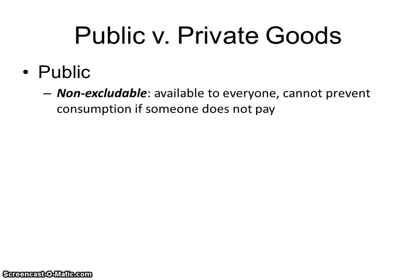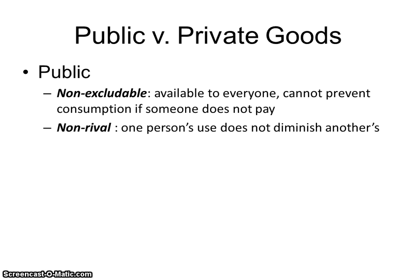Public goods have two characteristics. They are non-excludable, meaning they're available to everyone and we can't prevent consumption if someone doesn't pay for them. And public goods are also non-rival, meaning one person's use does not diminish another person's use. So more than one person can use the good at the same time, and we can't stop someone from using it if they don't pay for it.